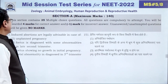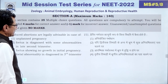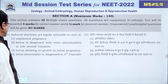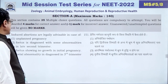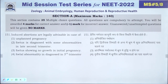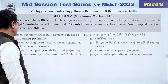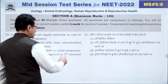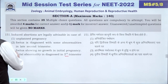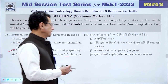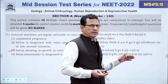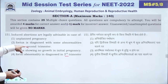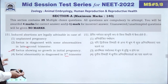Question 151: Induced abortions are not legally advisable for unplanned pregnancies. They are not advisable when fetal abnormality is diagnosed in late second trimester. However, if fetal growth shows no progress in initial pregnancy, abortion can be medically advised. Third trimester abortion is very risky. Unplanned pregnancy is not legal grounds. The answer is 3.